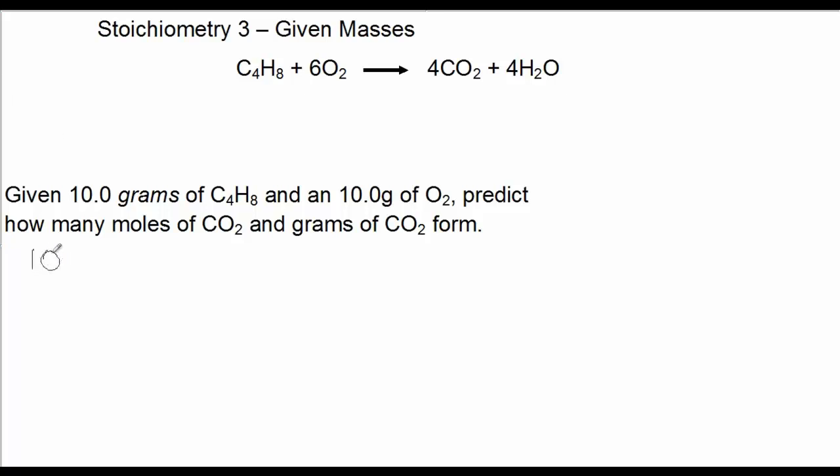So, first thing we want to do is convert both of these quantities to moles. So, 10 grams of C4H8 converted to moles. We use the reciprocal of the molar mass of C4H8, which in this case is going to be 1 mole over 56 grams. And 10 divided by 56 is 0.179 moles of C4H8. So, put that up here, 0.179.